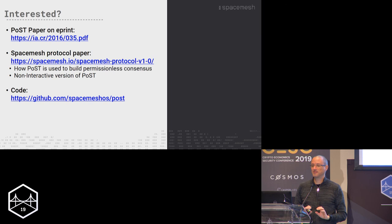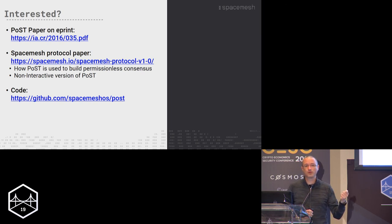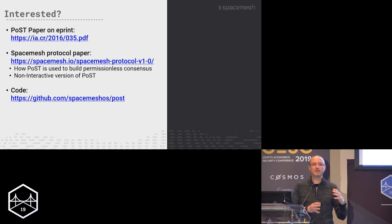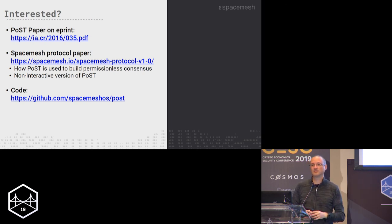That was basically the details. If you're interested in the technical stuff, there's a paper online on ePrint that explains in much greater detail exactly what happens, including formal proofs of security. On our website there's also the protocol paper for Spacemesh consensus, which explains how we use this proof of space-time as part of a secure consensus protocol — including a non-interactive version that combines a proof of sequential work with a proof of space-time. These things have been implemented in Go, the code is online and open source on GitHub. Thank you.